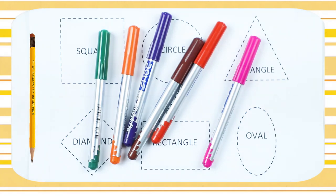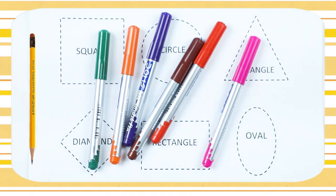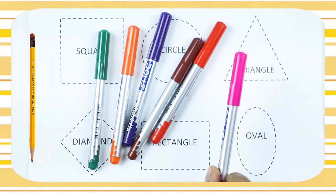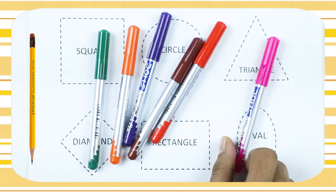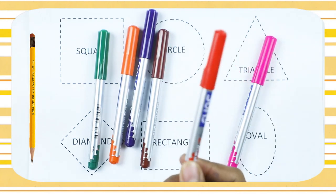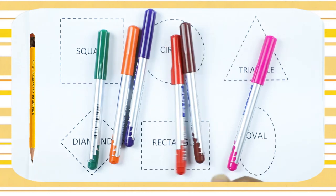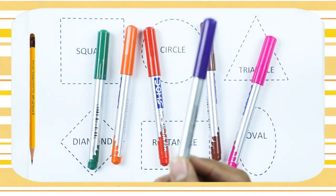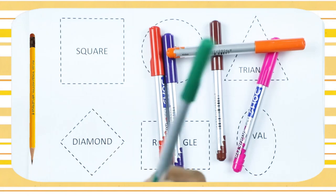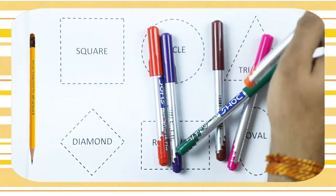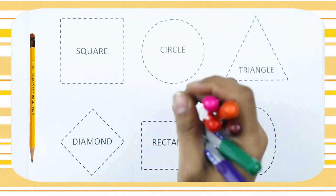Hello friends, today we learn shapes. Which shape is this? Square, circle, triangle, diamond, rectangle, oval. We learn shapes with some colors: pink, red, brown, purple, orange, and green. So let's start learning shapes!